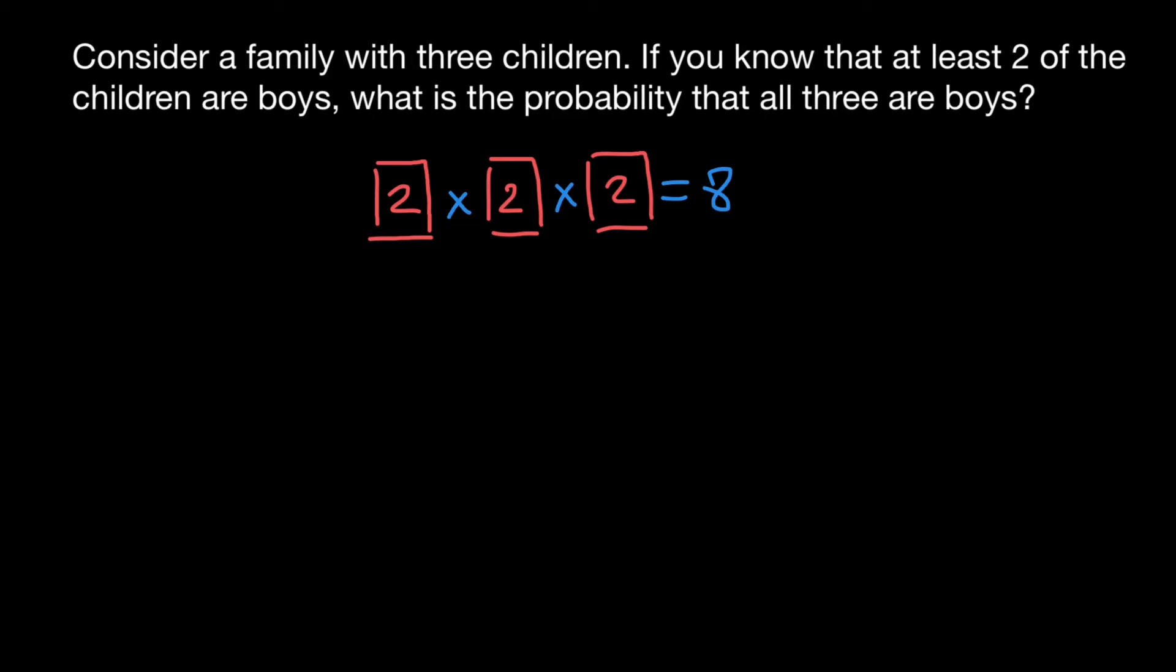The first combination can be that all three children are girls: girl, girl, girl. Another combination would be when two would be girls and one would be a boy: boy, girl, girl. We also can get a situation when the first child is a girl, second is a boy, and third is a girl. Yet another combination can be when the first two children would be girls and the last would be a boy.